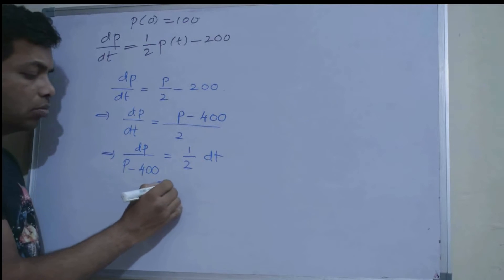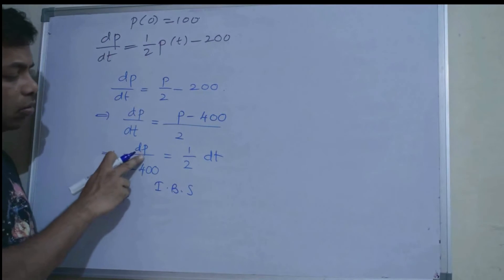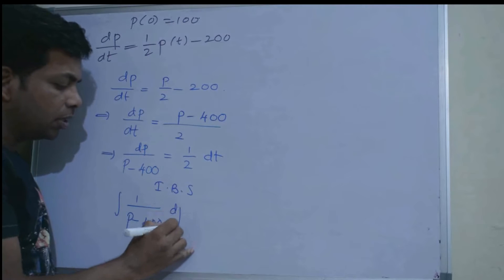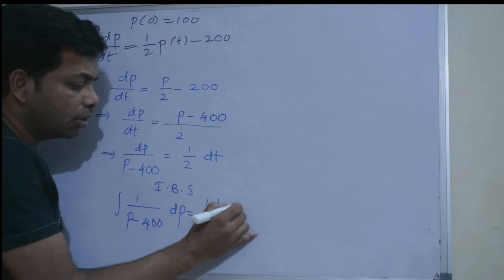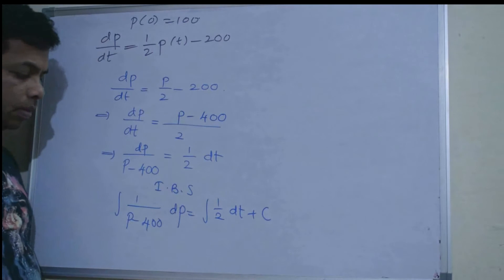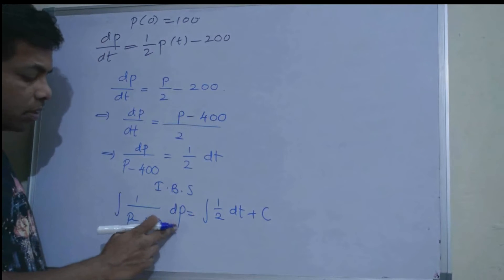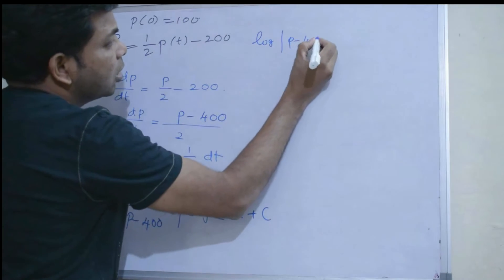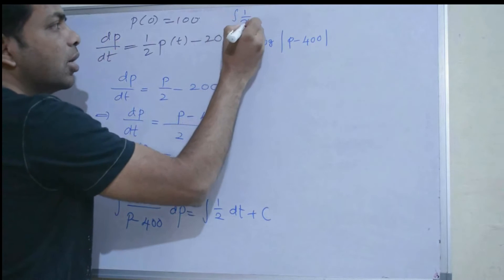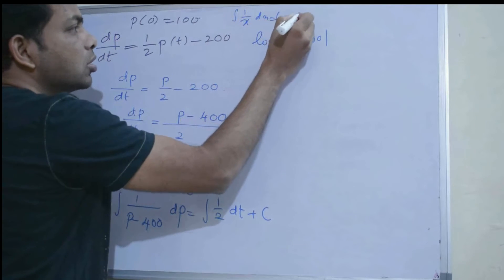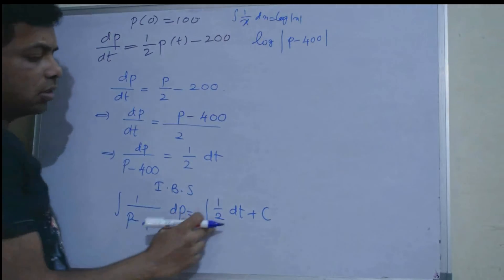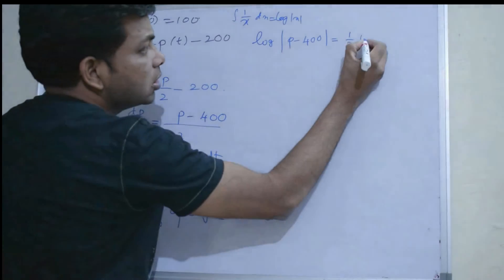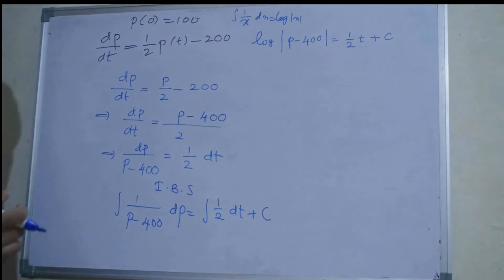We will do the integration on both sides to solve the differential equation. Integration of 1/(p - 400) dp equals integration of (1/2) dt. This is in the form of ∫(1/x)dx = log|x|. So log|p - 400| = (1/2)t + c.